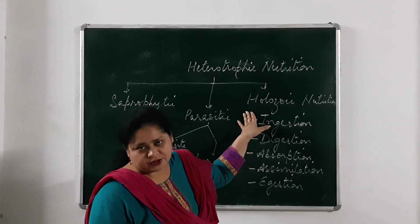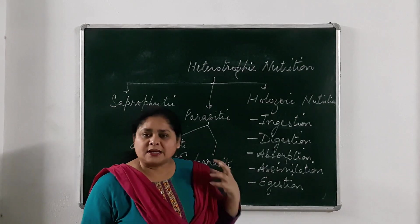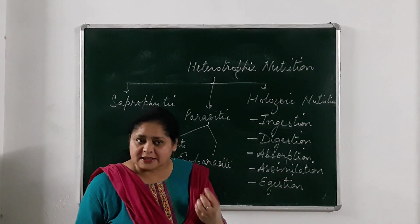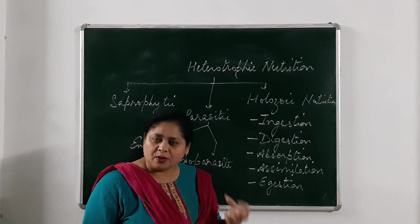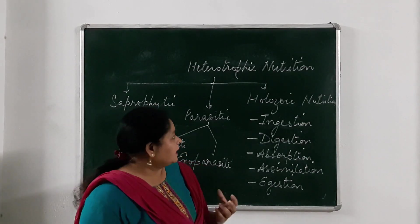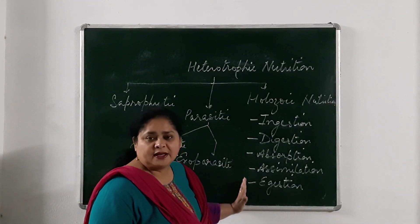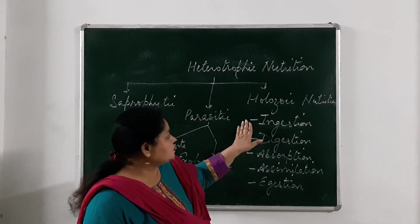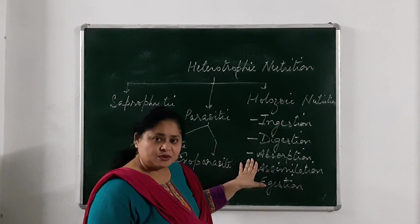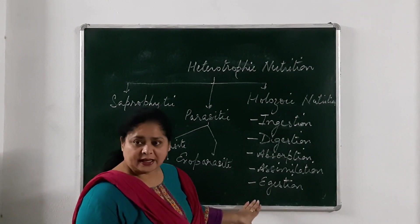The third one is holozoic nutrition. Holozoic nutrition is a kind of nutrition in which one living organism takes part or the whole body of another living organism as food. It includes five different steps: first is ingestion, second is digestion, third is absorption, fourth is assimilation, and fifth is egestion.